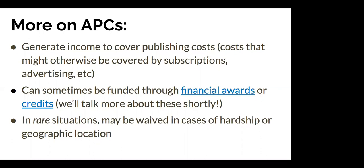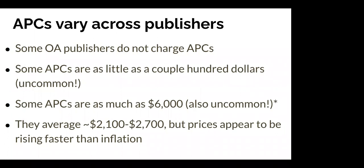In rare situations, journals and publishers may waive APCs for researchers in underfunded geographic areas — this is not something most US-based researchers should pursue, but it may be appropriate in some hardship situations and is worth asking about. APC costs vary widely across publishers. Some open access publishers don't charge them at all, funding their work through other means. Some journals here at UNCG don't charge APCs — they're funded through professional service. Some APCs can be relatively cheap, a couple hundred dollars, though this is sadly uncommon.